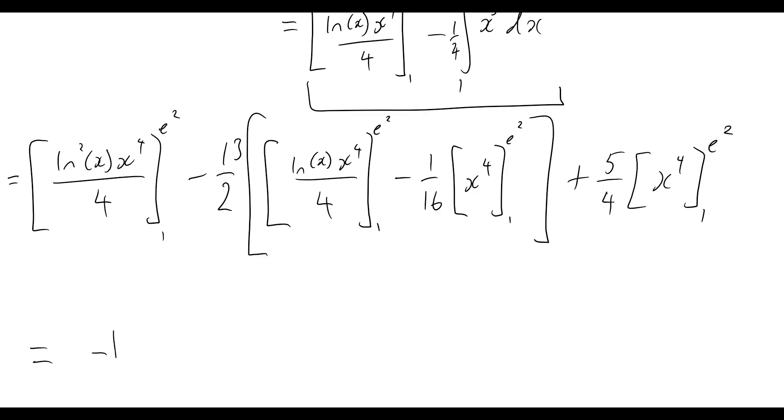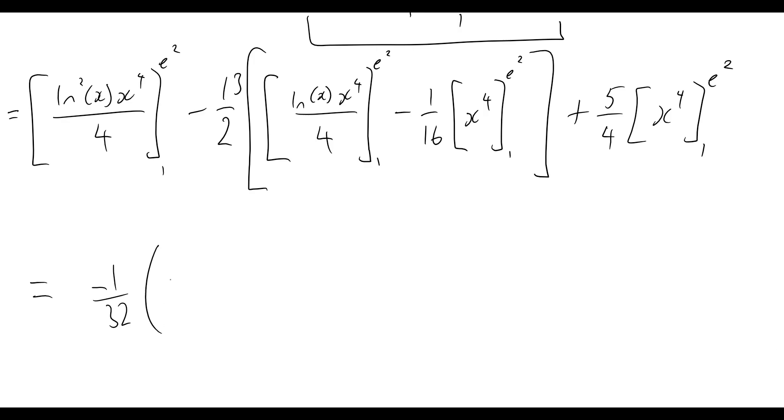So I'll just give the answer here. So the final answer is now just minus 1 on 32, and then in brackets, we've got 19e to the power of 8 plus 53. And that is our final answer for today.